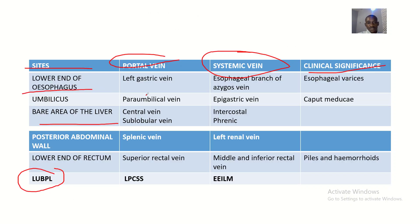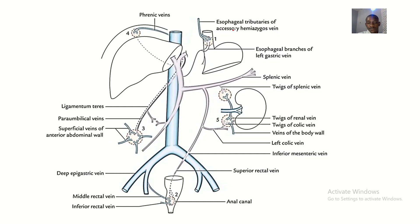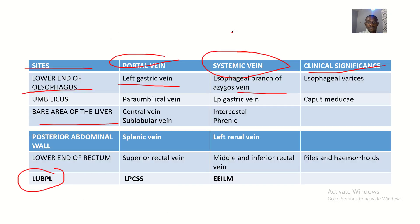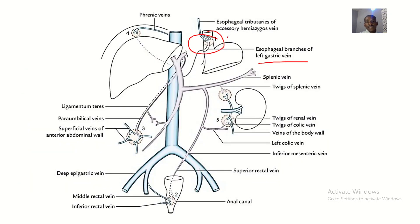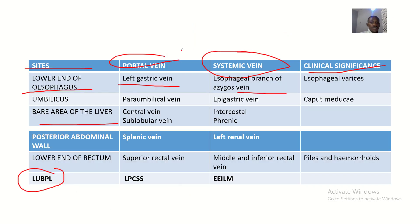At the lower end of esophagus, the left gastric vein and the esophageal branch of the azygos vein — or hemiazygos vein — come together. These are the portal and systemic contributions respectively at this site.